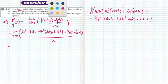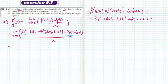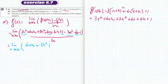The 3x squared and the minus 3x squared cancel to 0. The 6x and the minus 6x cancel to 0. The 1 and the minus 1 cancel to 0. So I've got the limit as h approaches 0 of 6xh plus 3h squared, all over h.